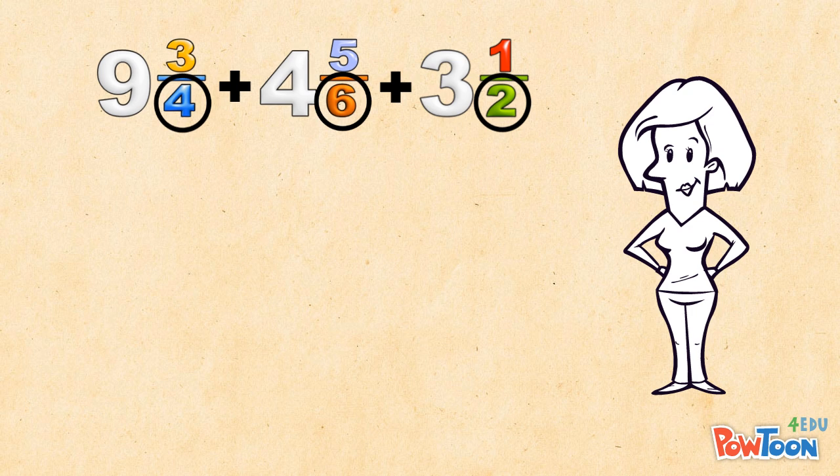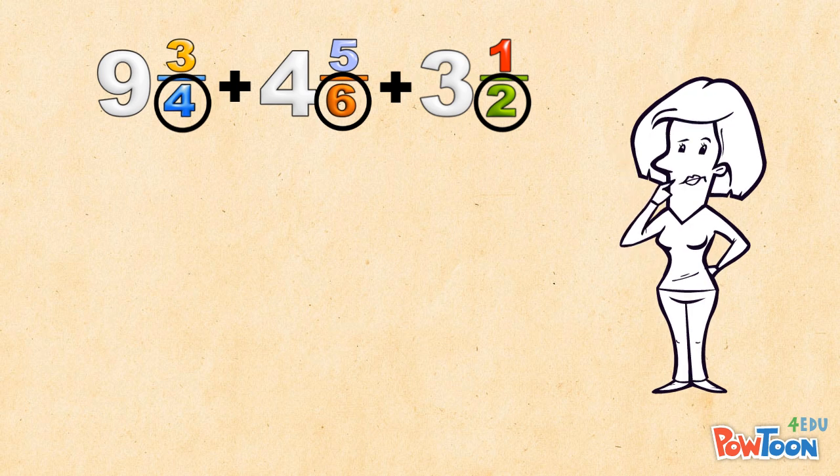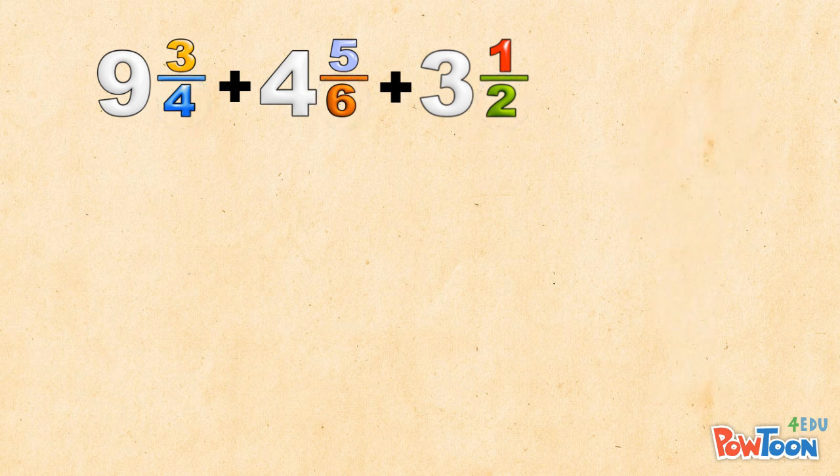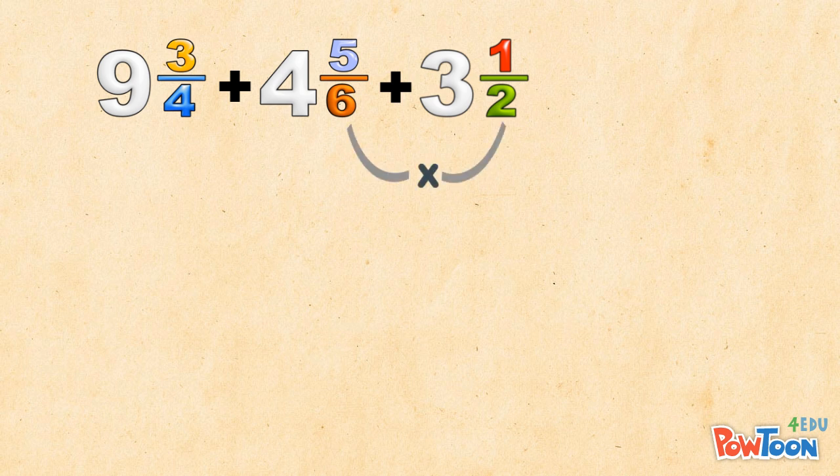Our denominators are 4, 6, and 2. These don't play nicely together. We need a new common denominator for all of them. We multiply the largest and the smallest values together. 6 times 2 is 12. 12 is also in the 4 times table, so our lowest common denominator is 12.